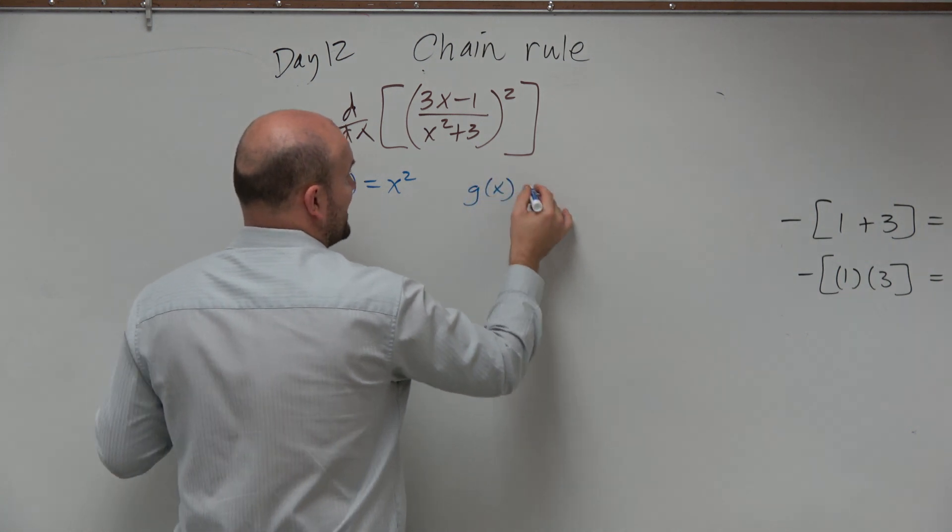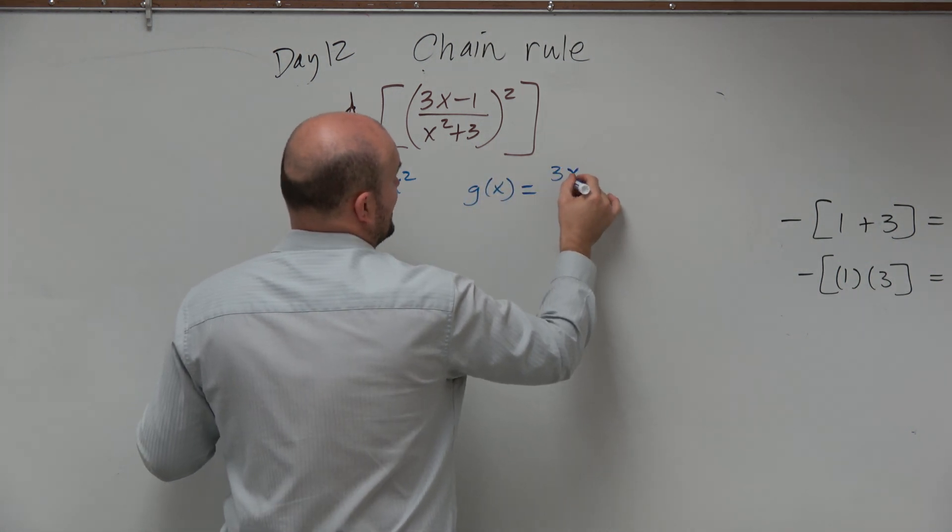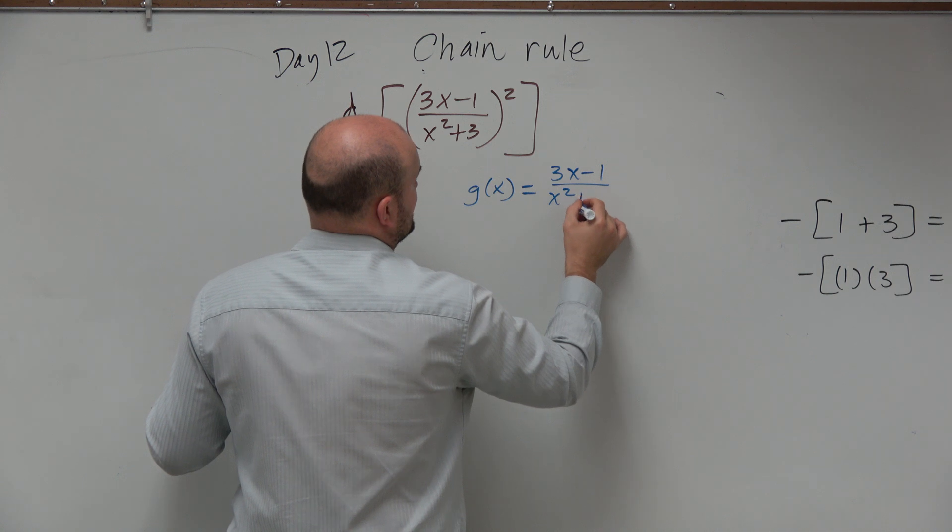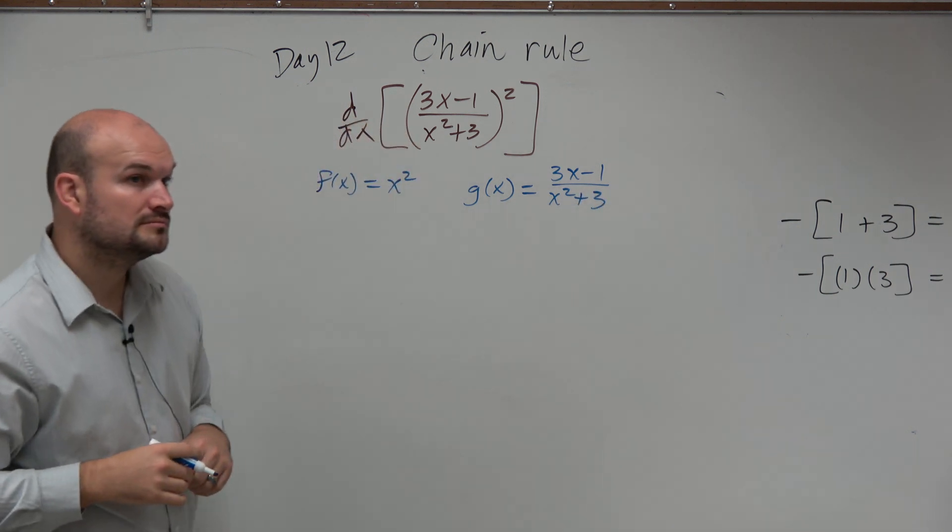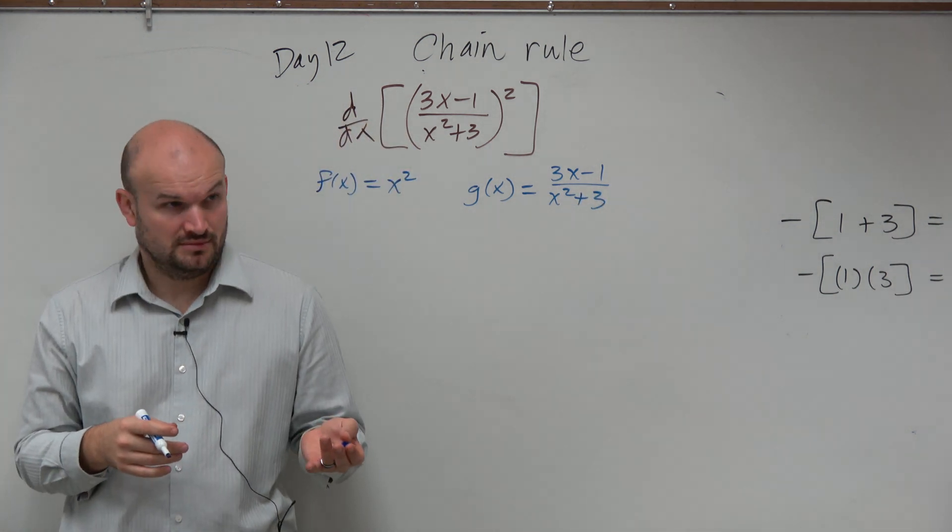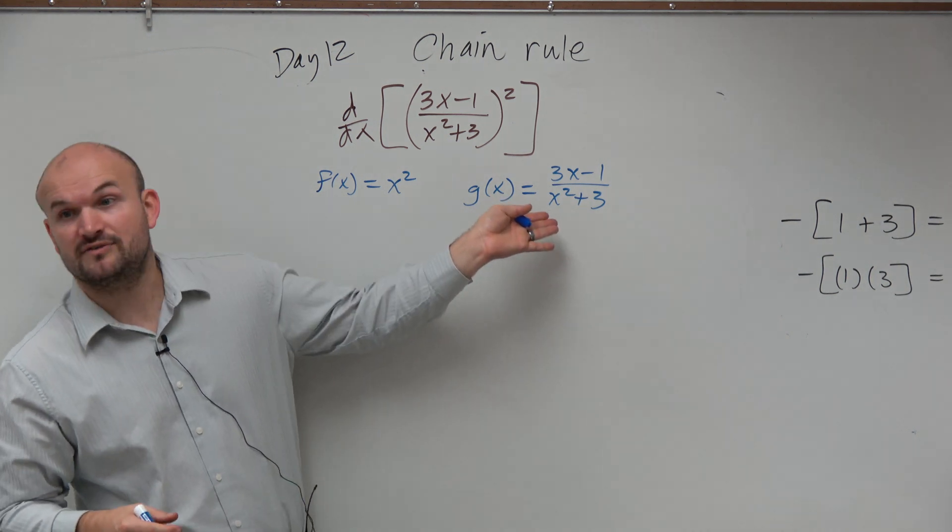The g of x function, which is my inside function, is going to be 3x minus 1 over x squared plus 3. Would you guys agree with me? Yes? That's not a very nice child function.